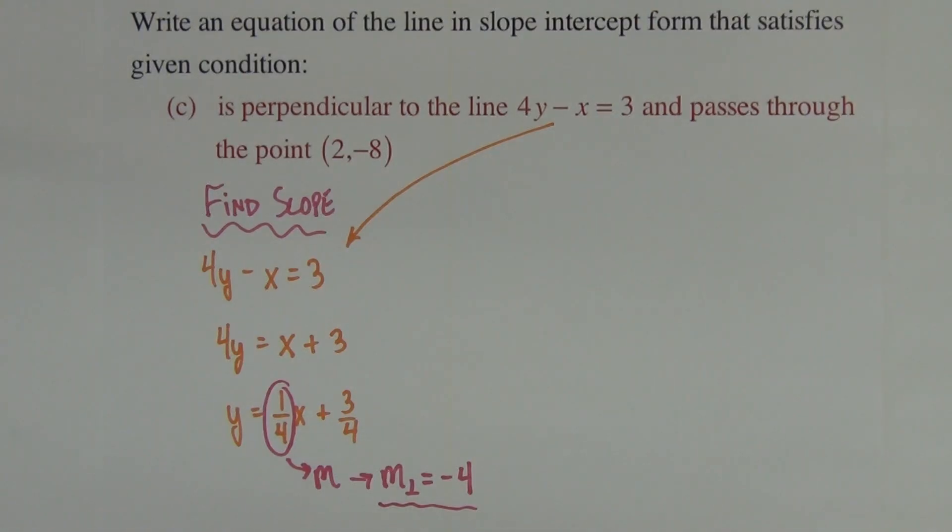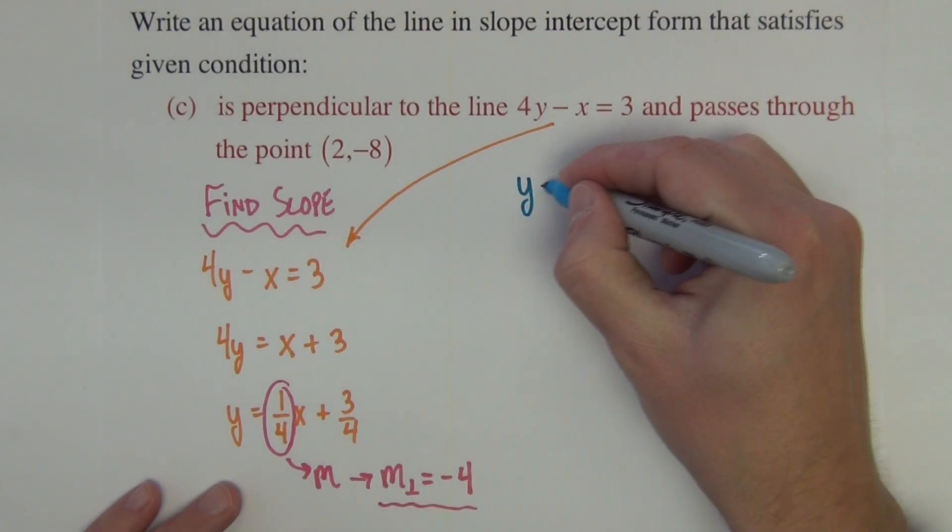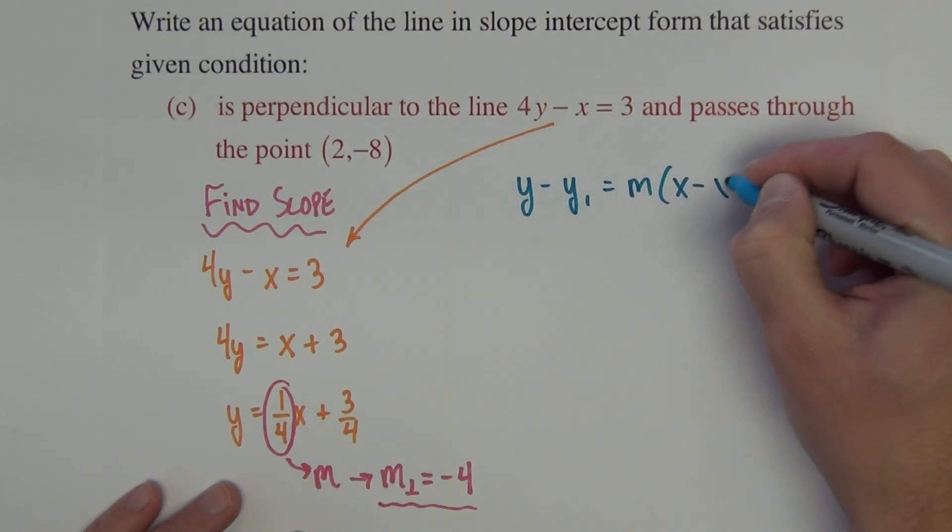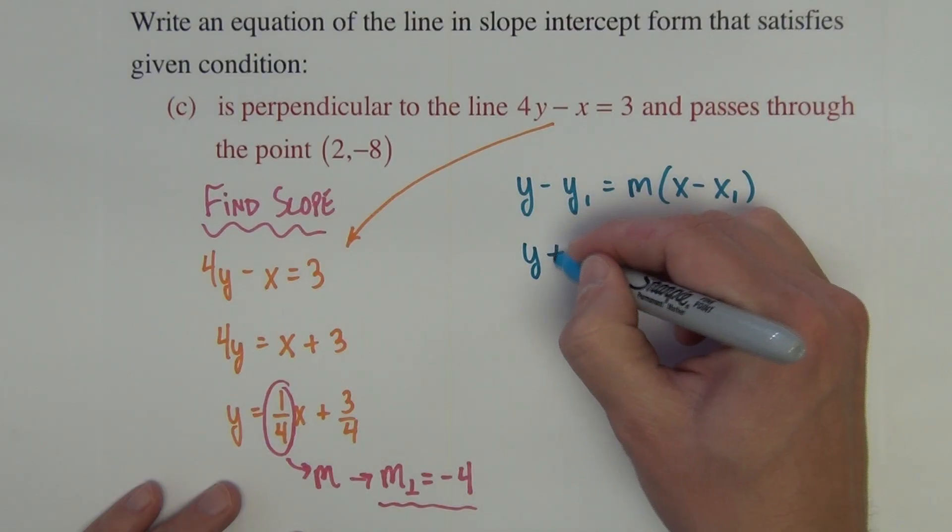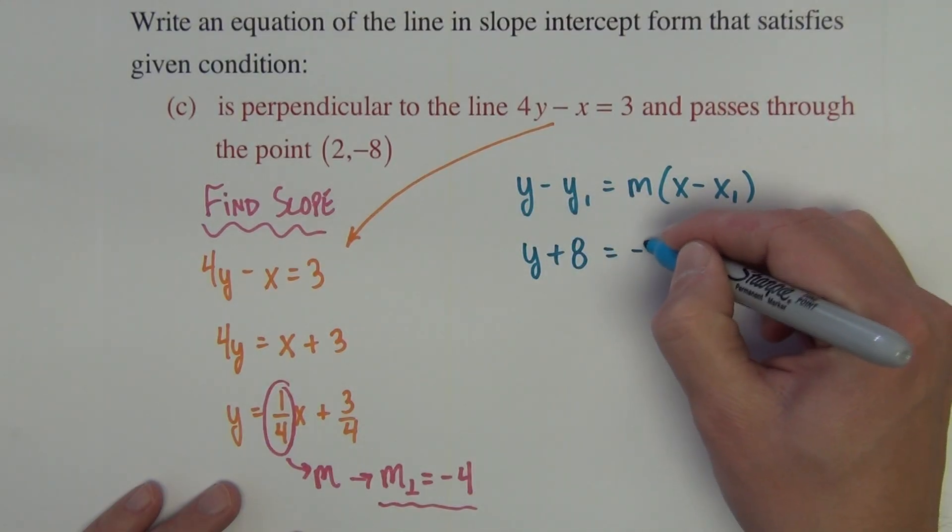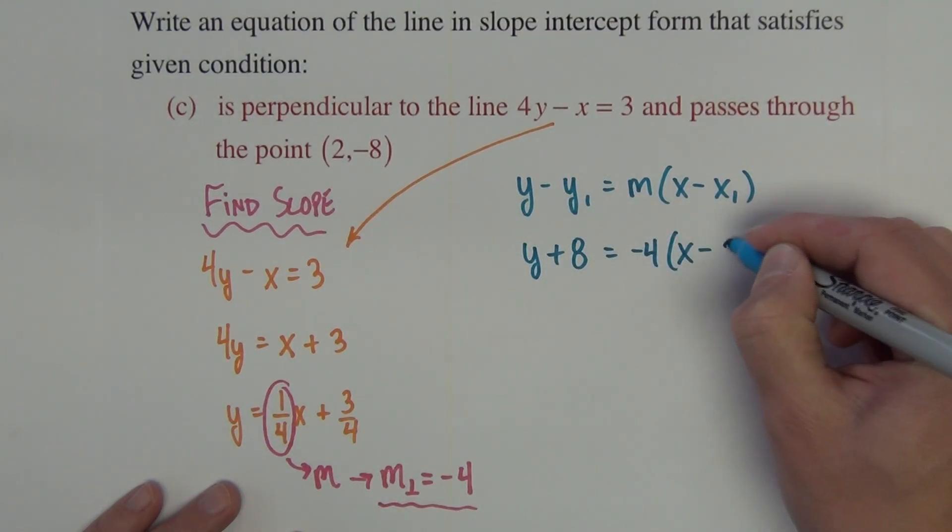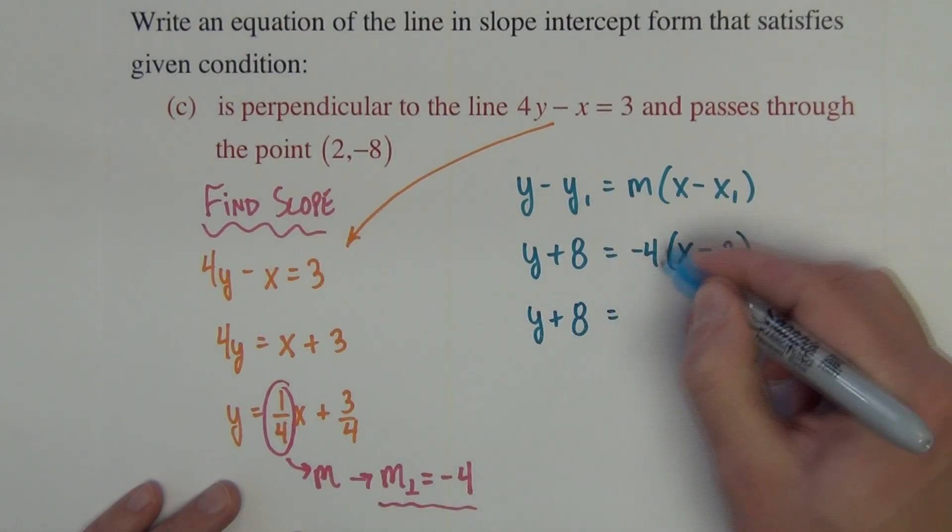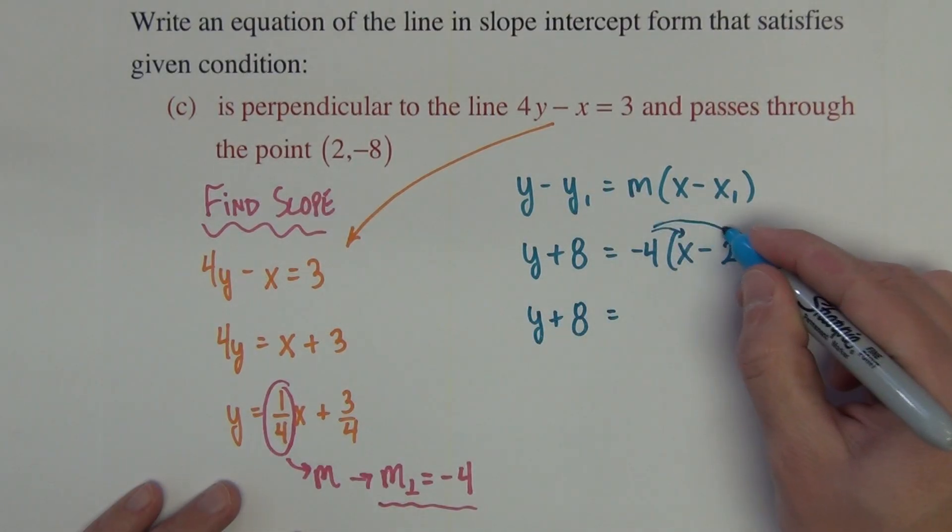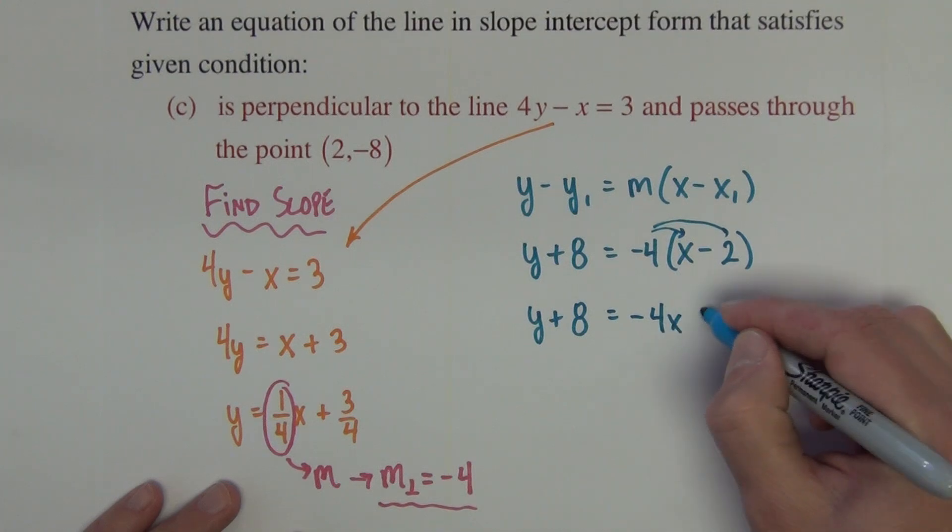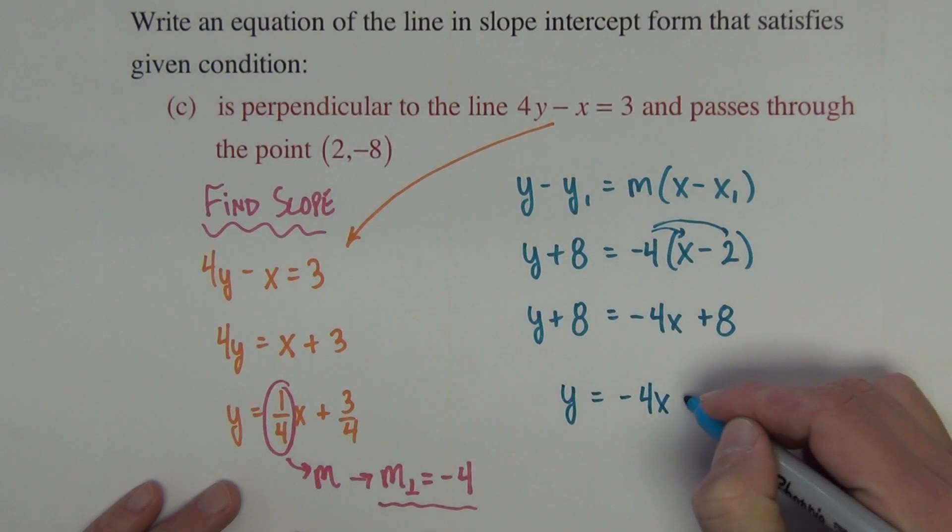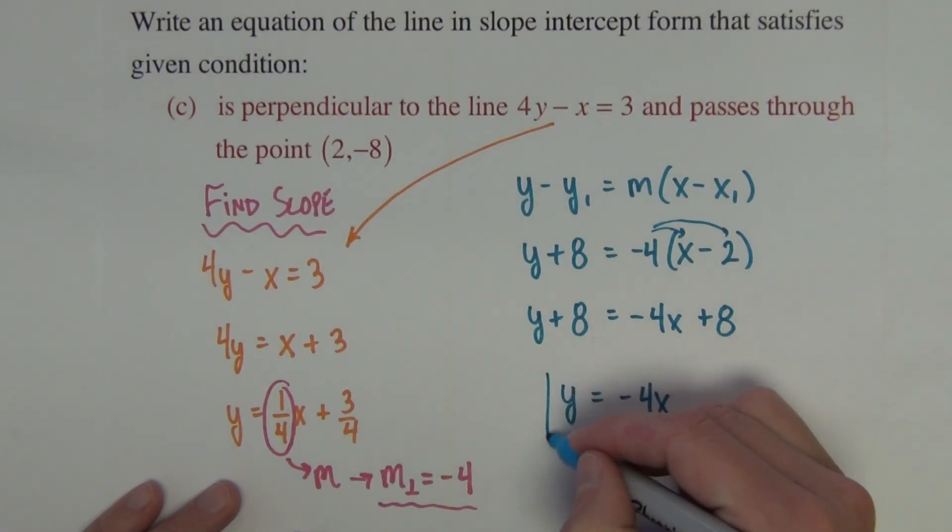We're going to use that negative 4 slope in point-slope: y minus y1 equals mx minus x1. So y minus negative 8 equals negative 4 times x minus 2. We get y plus 8 equals negative 4x plus 8. So y equals negative 4x, and that's all.